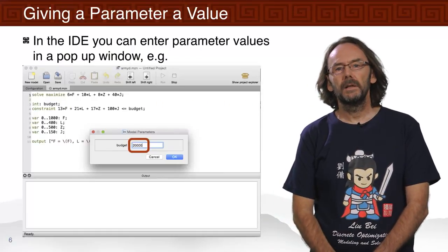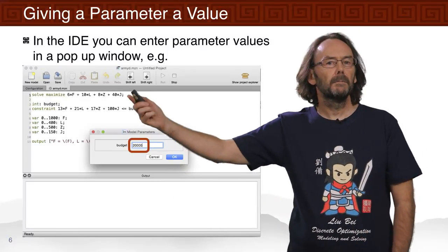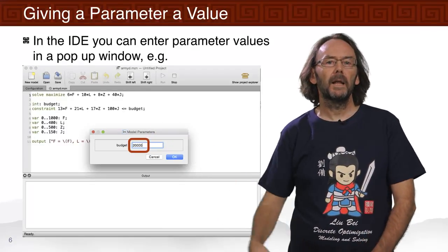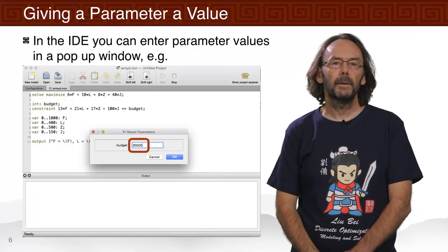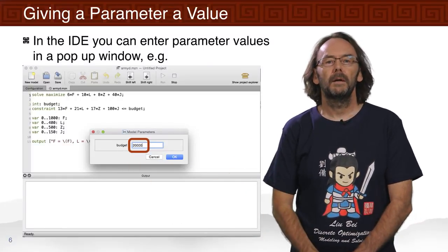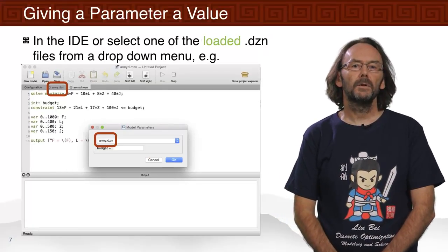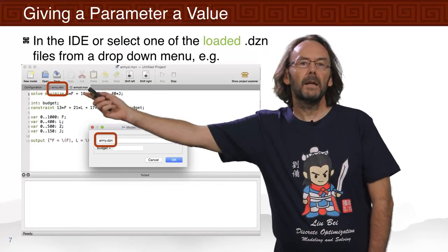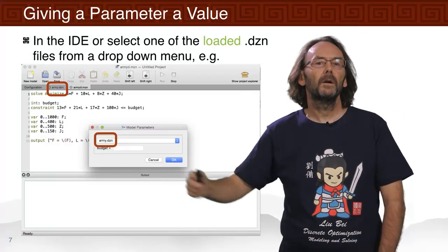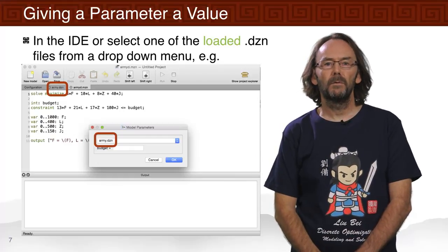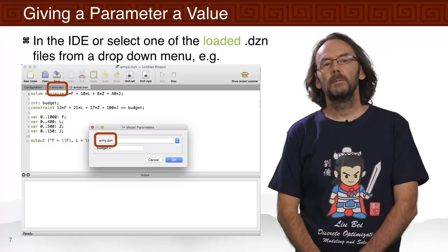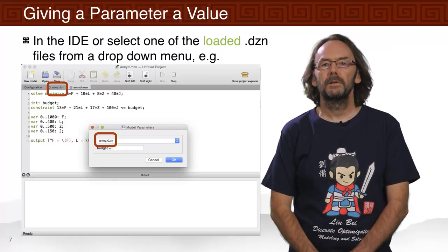We can also use the integrated development environment. If we run the model, MiniZinc will realize we haven't given a value for the parameter and will pop up a window asking us to type in the missing value. We can type in the budget value and hit continue to get a solution. Alternatively, if army.dzn is loaded in the IDE, we can select it from a drop-down menu when we run, which will also supply the parameter value.